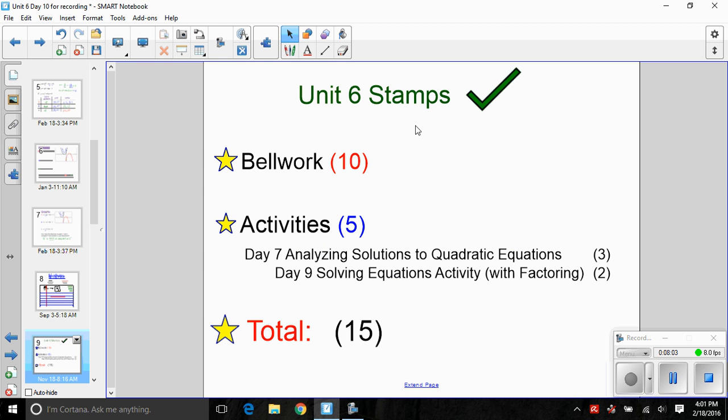The last thing we want to do is make sure that we have our unit 6 stamp check. We've got bellwork days 1 through 10, that includes today's bellwork. Activity stamps, there are 5 possible. Our day 7 activity, 610 Analyzing the Solutions to Quadratic Equations, stamped eligible items included B8, C8, and D8 for a total of 3.